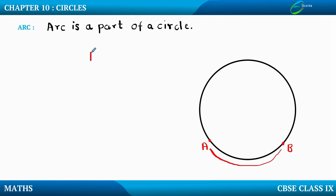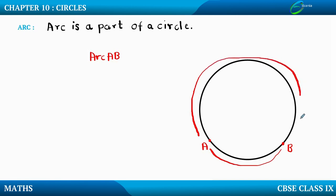The problem is, if I name this as arc A, B, I have two options. Arc A, B can be like this over here, or I can move like this as well. So two points are enough to make an arc, but to name an arc, I need at least three points.